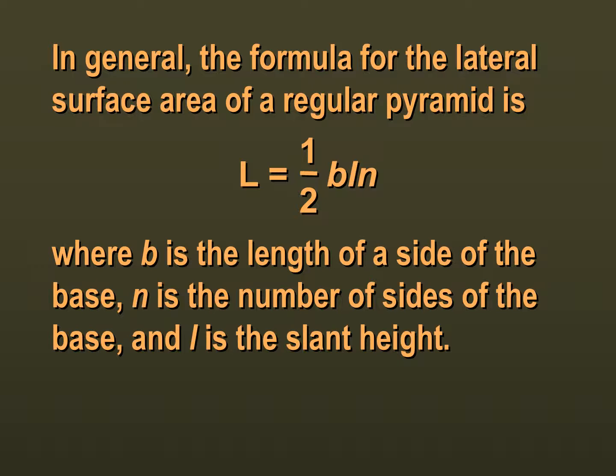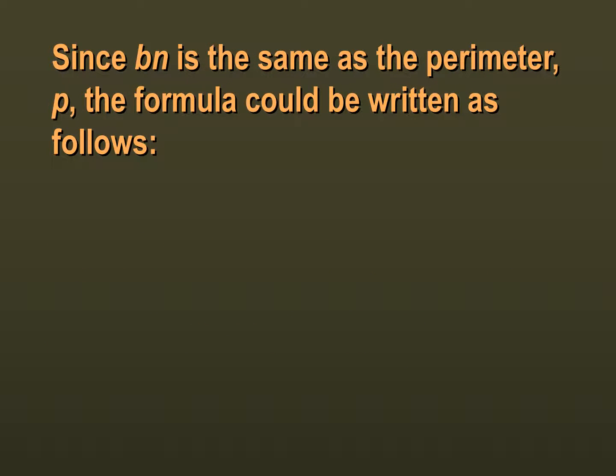In general, the lateral surface area of a pyramid is one half B times L times N, where B is one of the sides. But B times N — the length of one side times the number of sides — is the same as perimeter. So the formula you actually want to know and learn is that your lateral surface area is one half P, which is perimeter, times little L, which stands for slant height. There's a difference between big L, which stands for lateral surface area, and little L, which stands for slant height.